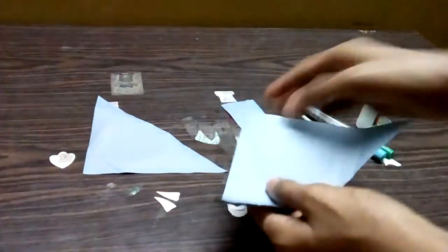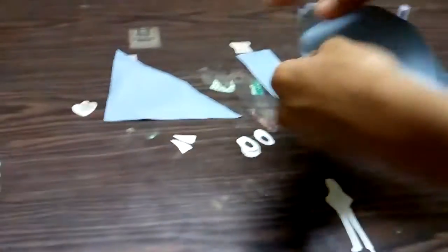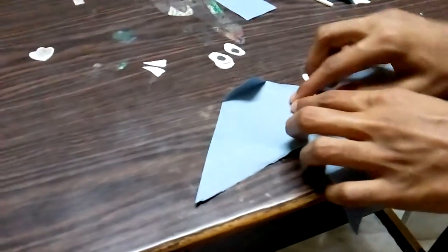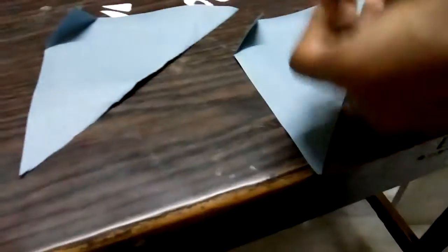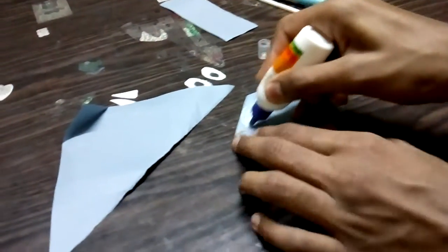So to do this, firstly fold both the pieces in this way. Now take glue and apply it on whole of the paper.